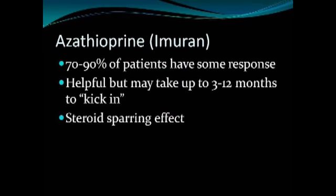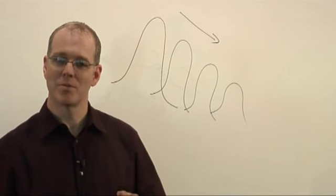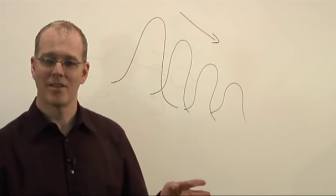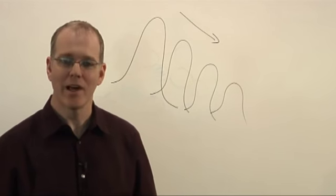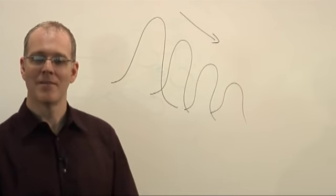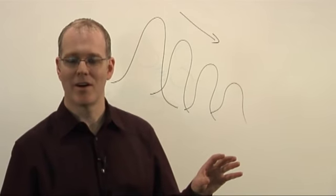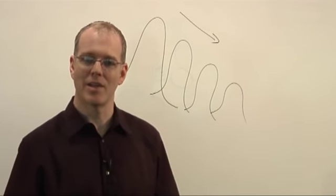Immunosuppressants should be considered if a patient is not doing well on steroids or presents with a very severe case. Imuran (azathioprine) is probably the most commonly used. Be aware that it can take months to kick in — at least three months, sometimes up to a year — so patience is needed. About 12% of patients get a severe flu-like response. Check a CBC periodically while on Imuran to watch for aplastic anemia.